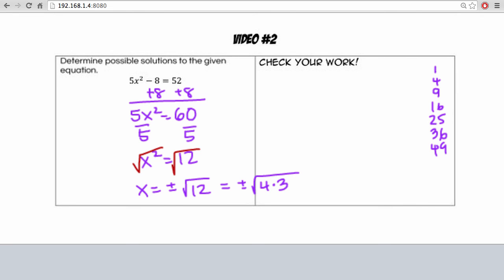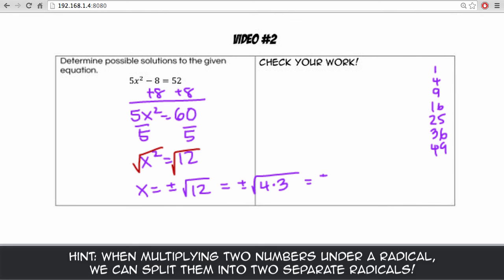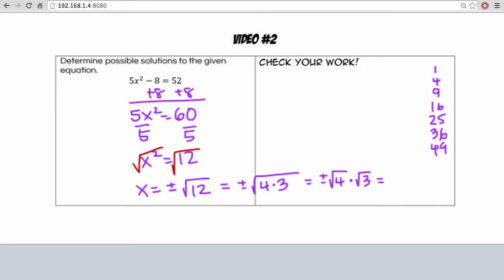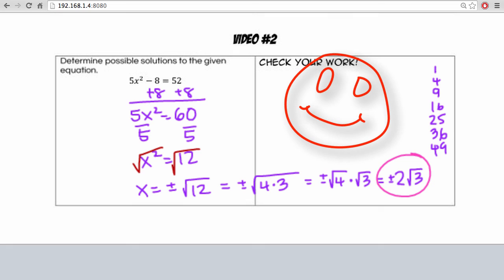And we know that we can actually split up our radical. So we have the square root of 4 times the square root of 3. And we can simplify the square root of 4 to be 2. And square root of 3 stays as is. So our answer is going to be plus or minus 2 rad 3. And that's it.